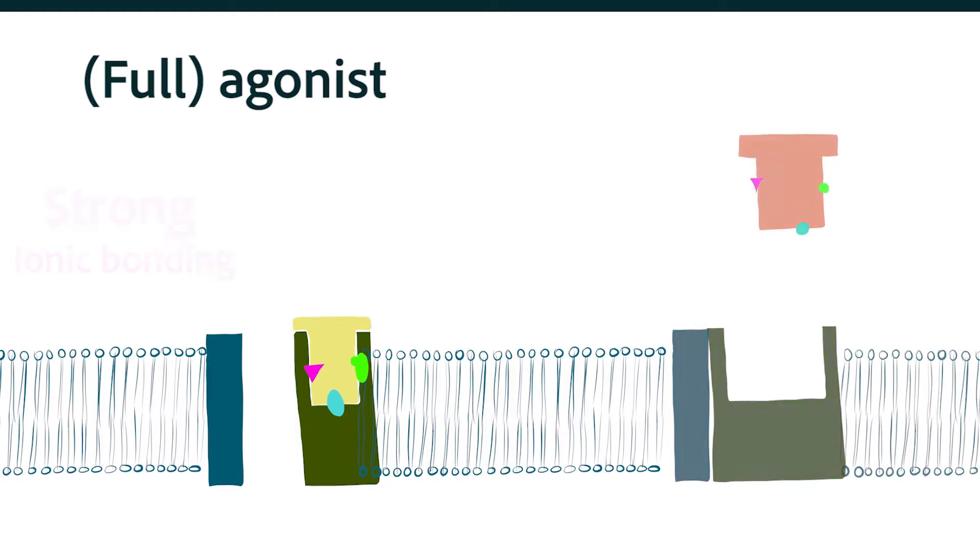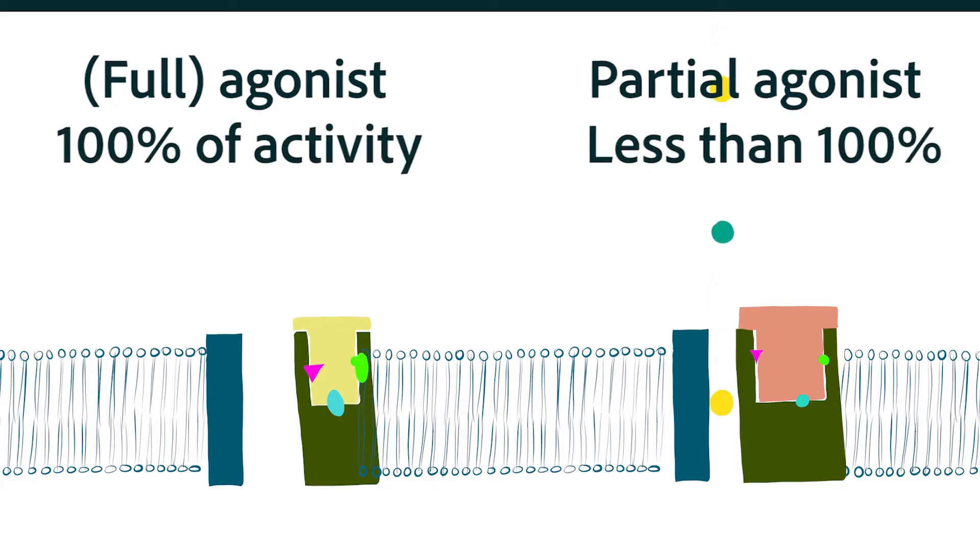What do you think would happen if a drug shaped the same way with the same molecular bonds was a little bit larger, maybe just too large to allow the gate to fully open? In that hypothetical case, the molecule would probably be a partial agonist.